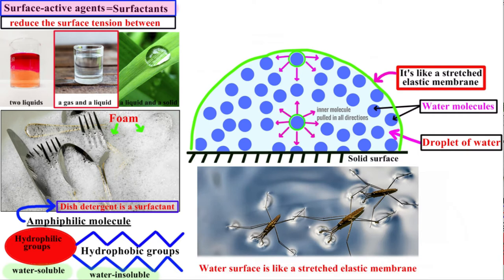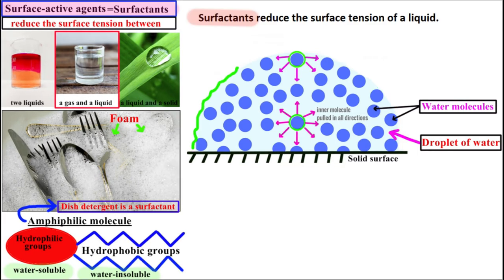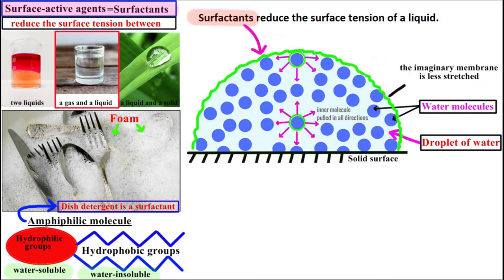Look at these mosquitoes on the water — it seems like they are on an elastic membrane. Surfactants reduce the surface tension of a liquid, making this imaginary elastic membrane less stretched. In other words, they reduce the work needed to create the foam and facilitate foam formation.